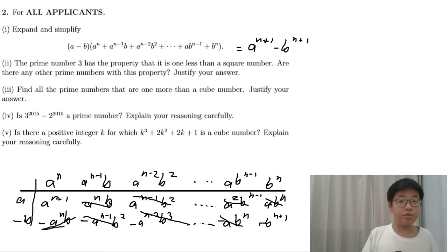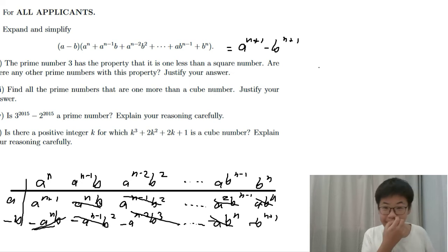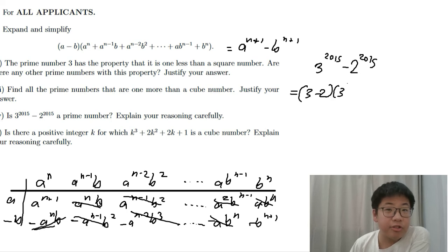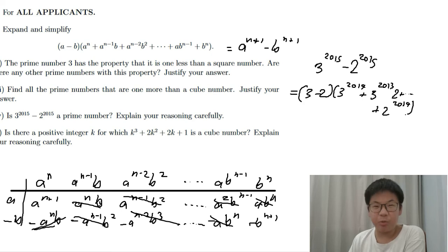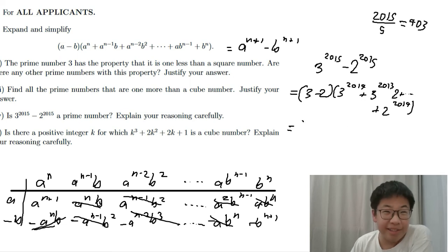Is 3 to the power of 2015 minus 2 to the power of 2015 a prime number? Explain your reasoning carefully. Well, the obvious way to do it using the formula equals to (3 minus 2)(3^2014 plus 3^2013 times 2 plus 2^2014). But the smarter way to do it is to realize that 2015 actually has divisors. That doesn't sound very smart, is it? But actually, it is a very smart method. One simple divisor of 2015 is 5. Yeah. It's 403 times 5. So, we can substitute 5 in this equation because a and b work for any numbers, even perfect powers like 3 to the power of 5 and 2 to the power of 5.